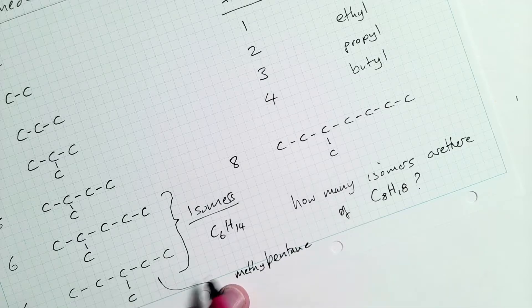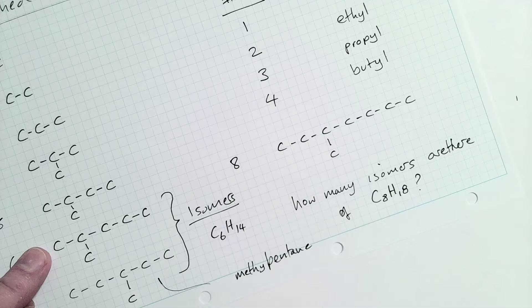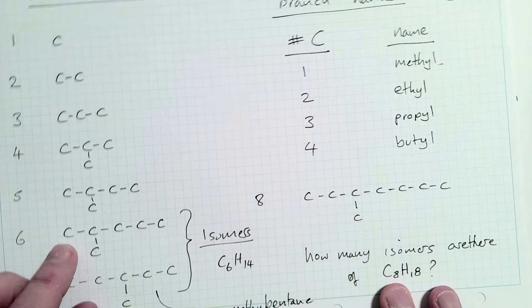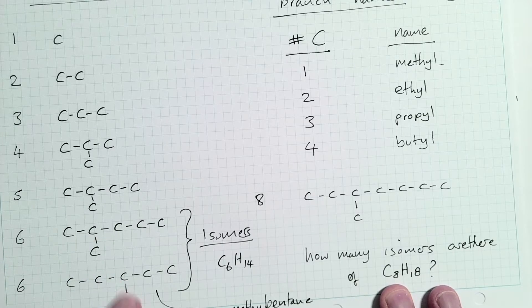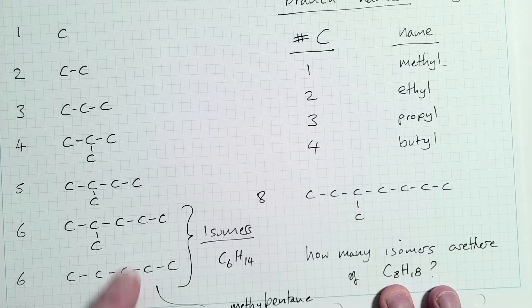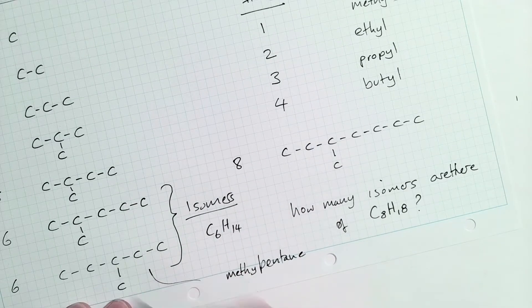So this stuff now is called methyl pentane, and there's two different isomers. So this one up here has the methyl group on the second carbon in the chain. And this one here has the methyl group on the third carbon in the chain. So I need to tell everyone where that methyl group is.